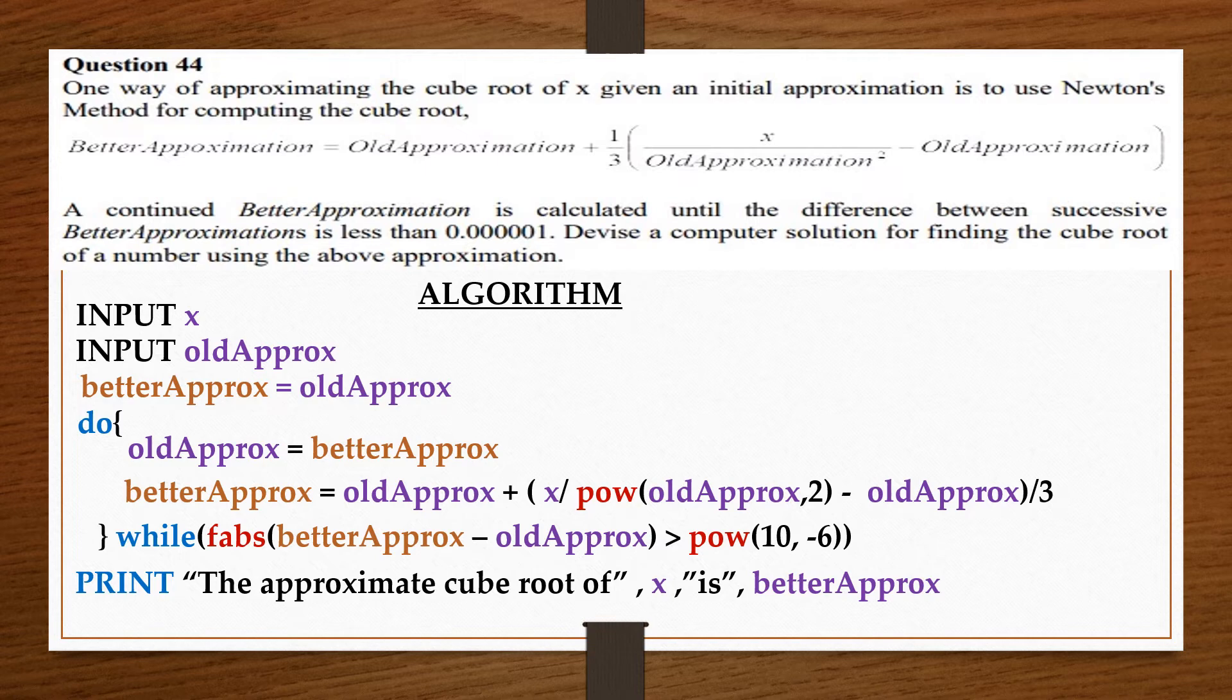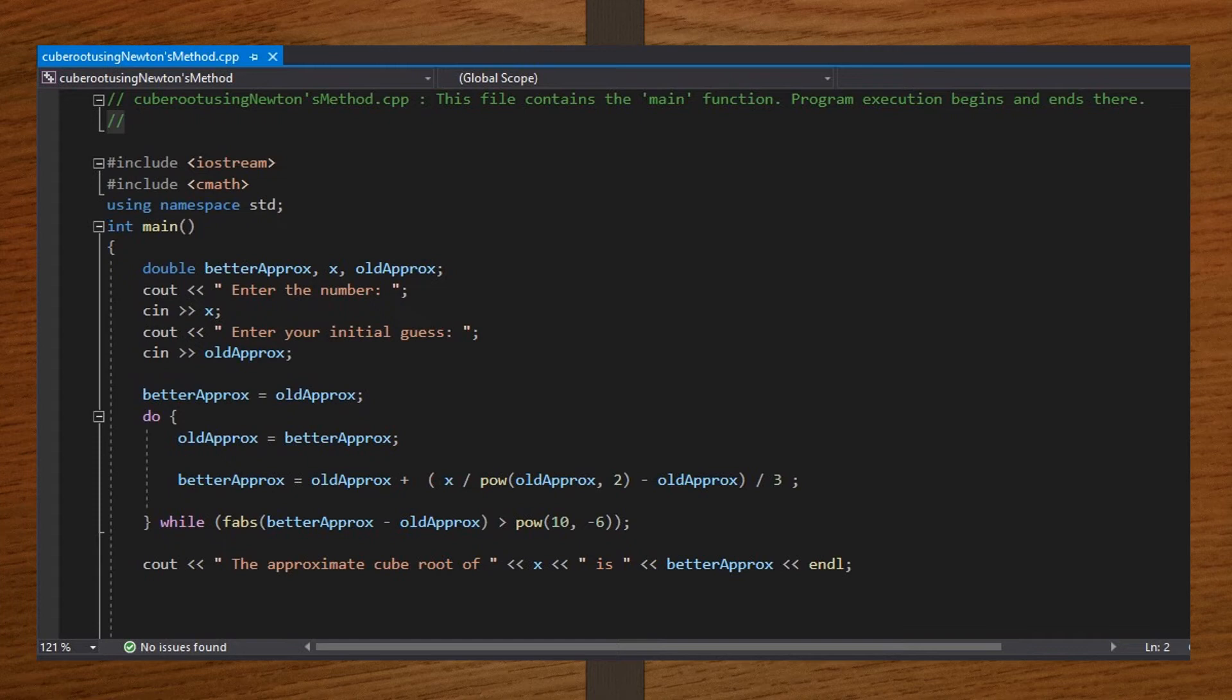Now let's convert the algorithm to code in C++. Before the int main function I include the cmath library because I'm using the power function, you know oldApprox to the power two, so the power function. In the int main function I declare my double and then I take the input from the user, that's the number the user wants to find the cube root of and then the initial guess.